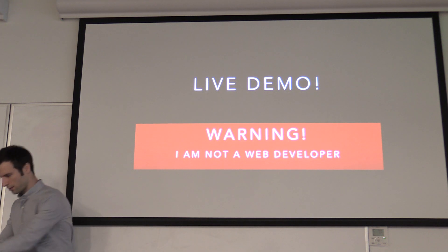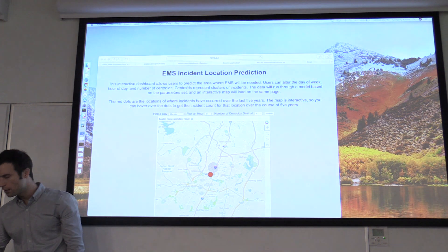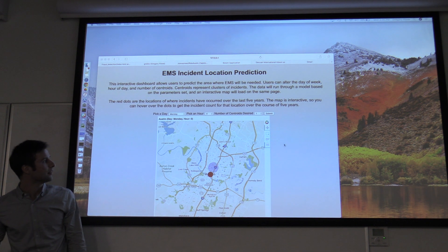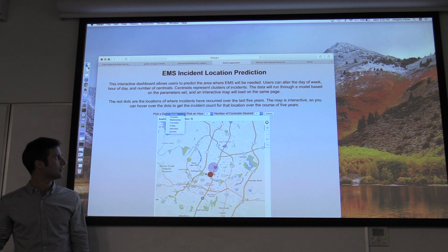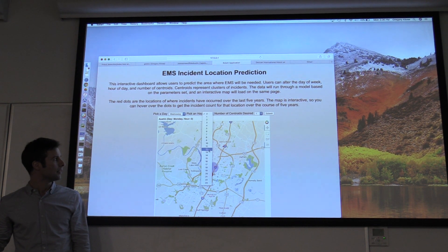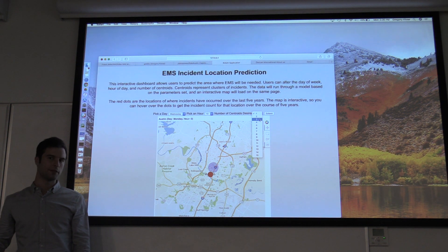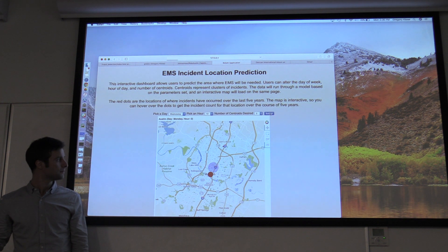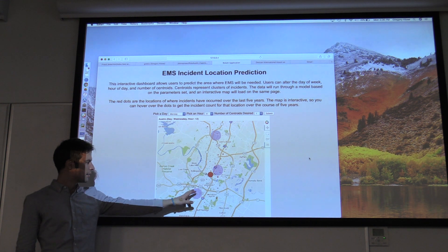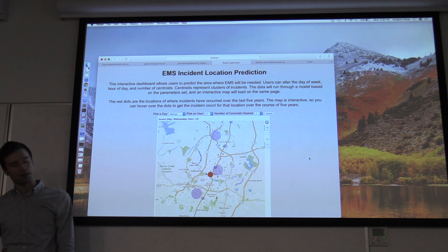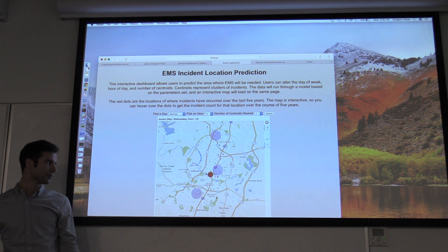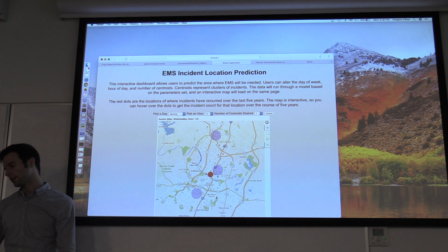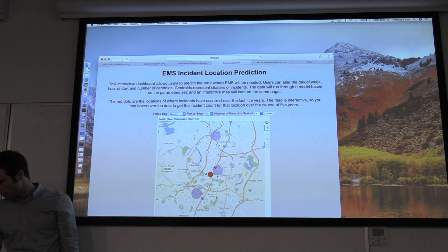A wise man once told me that a demo is worth a thousand PowerPoint slides. So this is the web app I created. Let's say you are a paramedic working for the city of Austin on a Wednesday at 12 o'clock, and you know there are three EMS vehicles on staff and you want to know where to position them. These blue circles are the hotspots my model predicted, and all these red dots are where incidents have occurred historically over the last five years in Austin. As you can see, there's a lot of activity in downtown Austin — that's probably because the population is young, and we have 315 incidents specifically in that location.